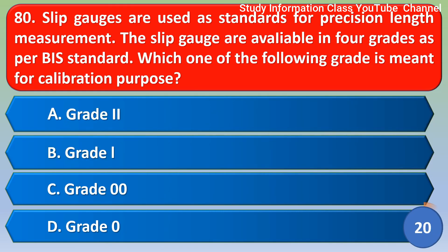Next question: Slip gauges are used as standards for precision length measurement. Slip gauges are available in four grades as per BS standard. Which grade is meant for calibration purposes? The correct answer is Option C, Grade 0.